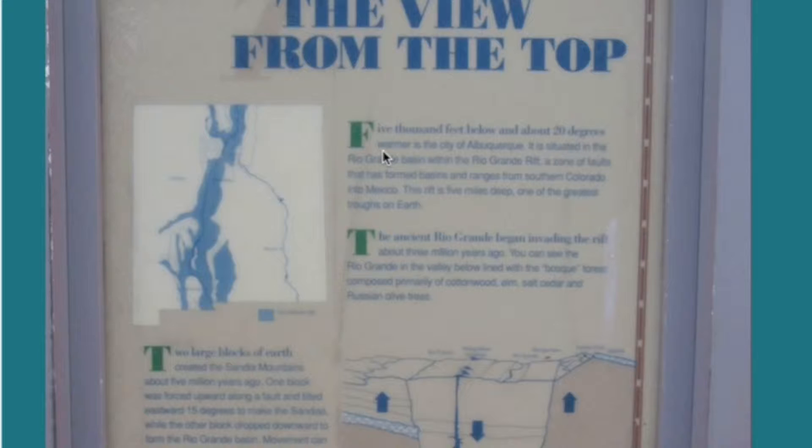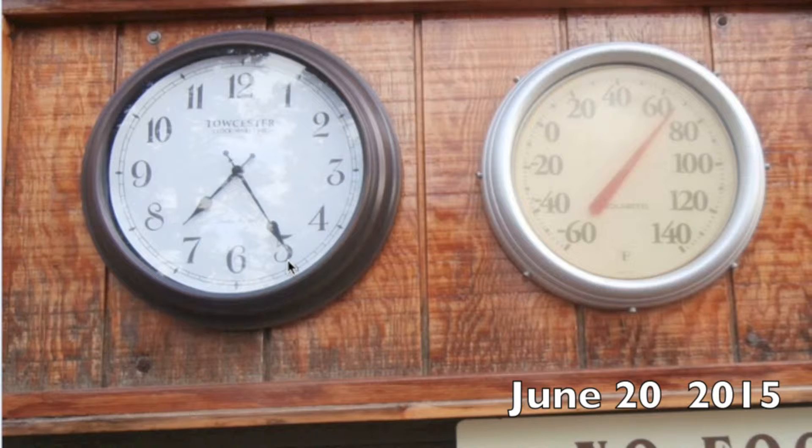As we get into the tram car to descend some 5,000 feet or 1,600 meters, the temperature will drop by about 20 degrees Fahrenheit or about 12 degrees Celsius as we descend to the city of Albuquerque. The time is 7:25 p.m.